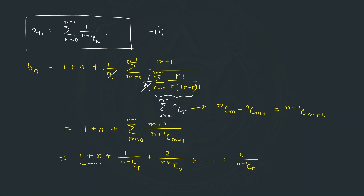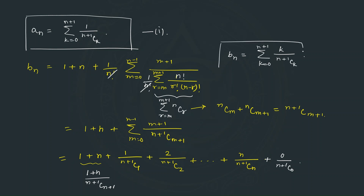We can write 1 plus n divided by 1 as (n+1) over (n+1)Cn+1. This gets summed with the remaining series, and one term is missing: that term equals 0, which we write as 0 over (n+1)C0. So the series bₙ becomes summation k equal to 0 to n+1 of k over (n+1)Ck.